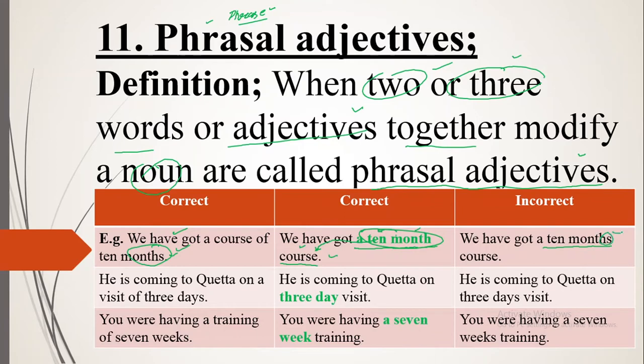Keep in mind: you will not put a plural with a phrasal adjective. So you say 'a ten month course,' NOT 'a ten months course.' We have got a course of three months — correct. A ten month course — correct. But 'a ten months course' — that is wrong.